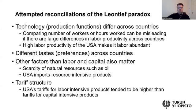In the Heckscher-Ohlin model, the production functions are the same for both countries, meaning technology is the same across different countries. This is one likely explanation for the Leontiev paradox, because if technologies are different — and in the early 1950s and 1960s the USA had superior productivity compared to other countries — then labor productivity of the USA was higher than in most other countries. If you not only count the number of workers but also take labor productivity into account, then in fact the high labor productivity of the USA can imply that the USA was actually labor abundant at that time.